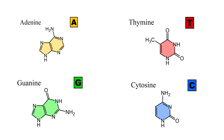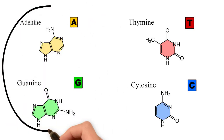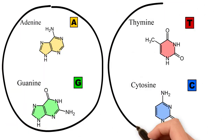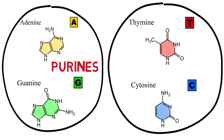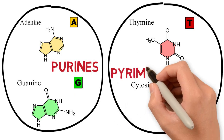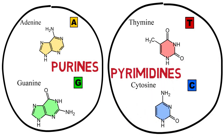The nucleotides can be classified into two groups – purines, like A and G, and pyrimidines, like T and C.